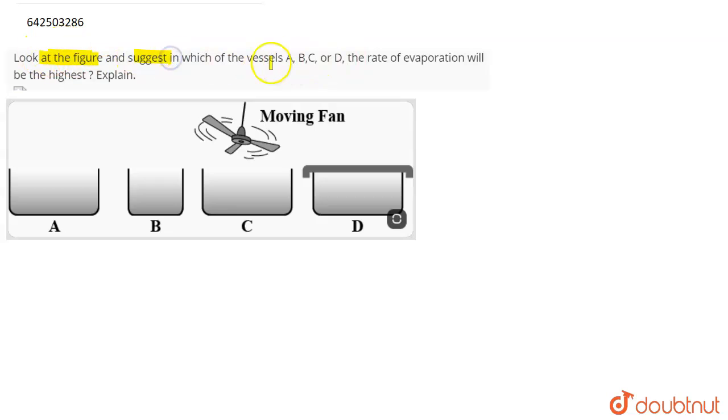The question is: Look at the figure and suggest in which of the vessels A, B, C, or D the rate of evaporation will be the highest. Explain.